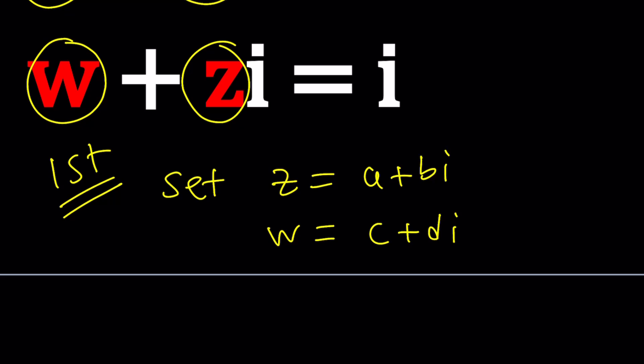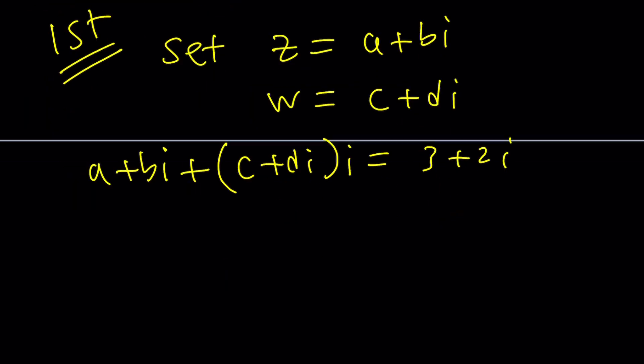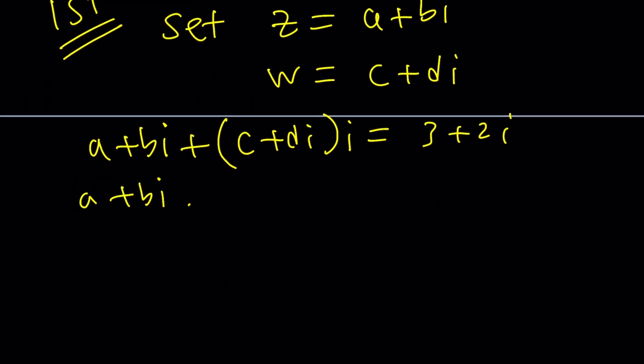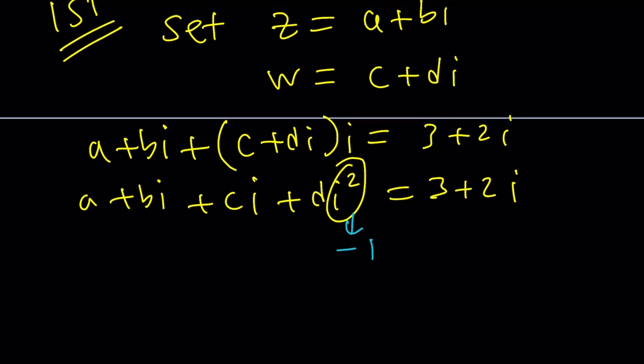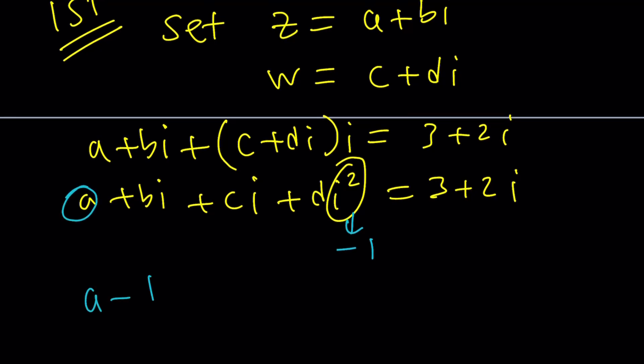a plus bi plus (c plus di) multiplied by i equals 3 plus 2i. And here, if you distribute, you're going to get a plus bi plus ci plus di squared equals 3 plus 2i. i squared is, wait a minute, did you forget? It's negative 1. Come on, that's the most important thing. You should never ever forget that. So that's a negative d.